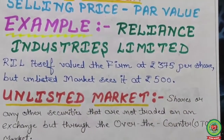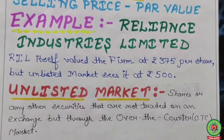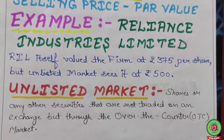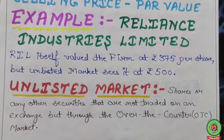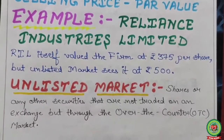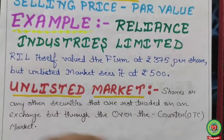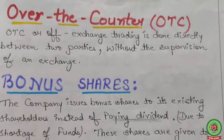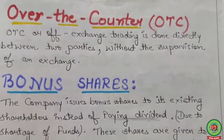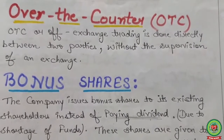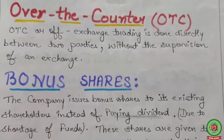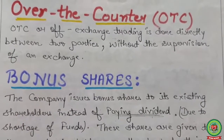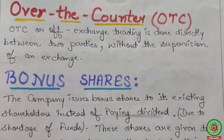A few related terms: unlisted market shares are securities not traded on any exchange but through the over-the-counter market. When not listed on a stock exchange like BSE or NSE, they are considered OTC. OTC or off-exchange trading is done directly between two parties without the supervision of any exchange — no dealing through any exchange, just over the counter between two parties.